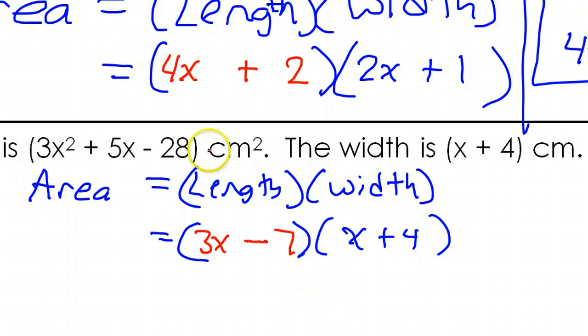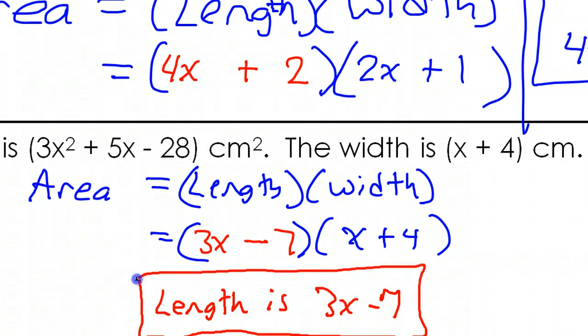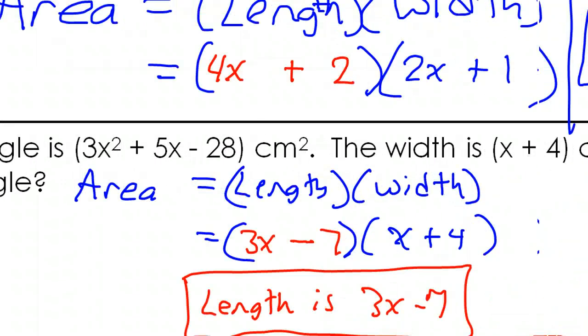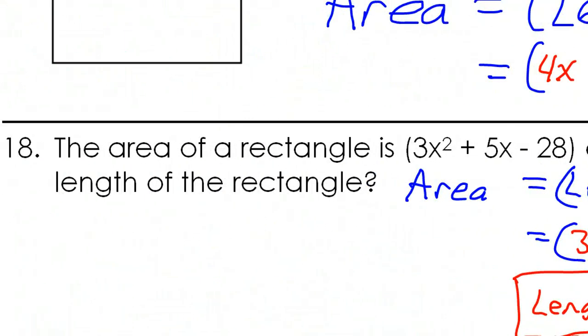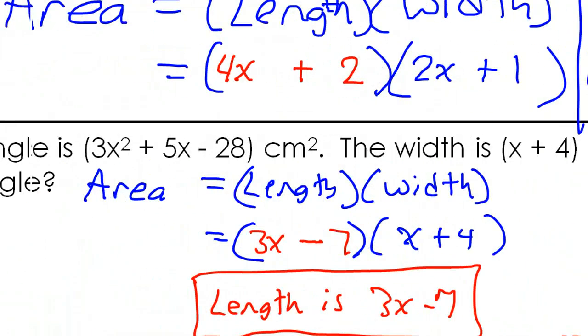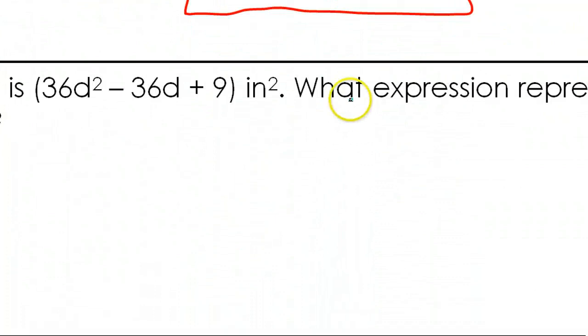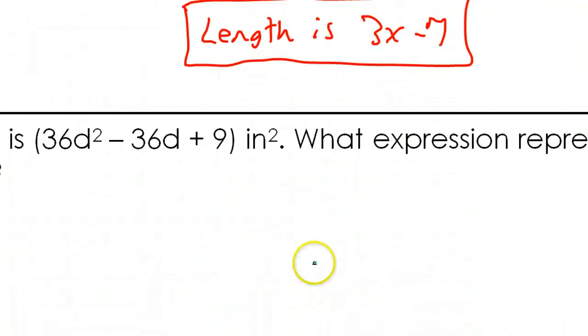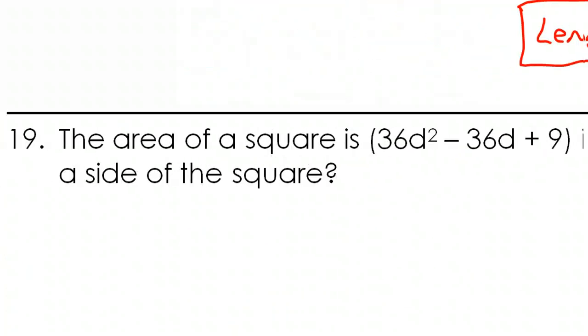That means length times width. So this must be the length. So length is 3x - 7. Brilliant. That was number 18. Looks like I'm shaking my head. Okay, what else?